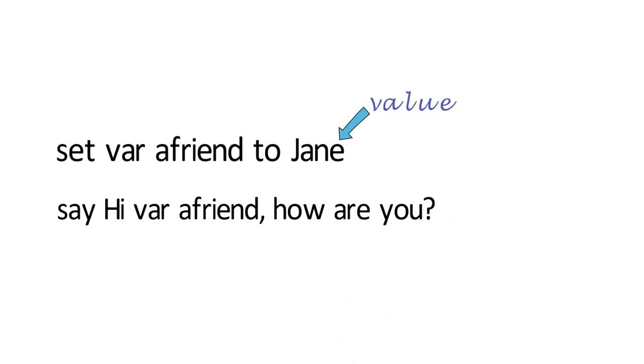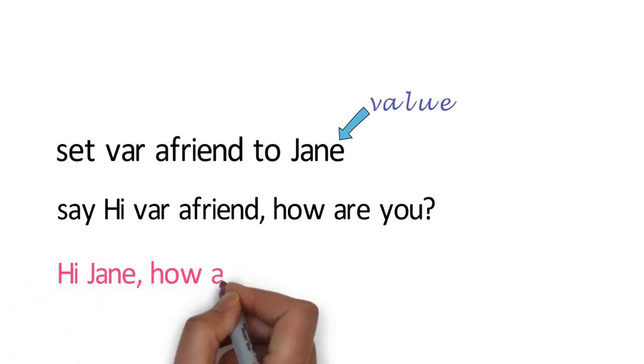Say hi var a friend, how are you? When this say command is run, the variable label a friend is replaced with the value Jane. So it would display as the computer automatically replaces the label a friend with the value Jane.